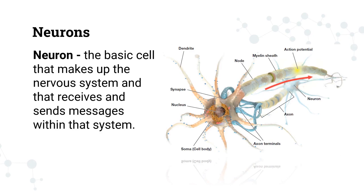If you command your arm to move, basically your neurons are communicating with each other. If you see something — like you're looking at your laptop right now — the information that enters through your eye will travel through the neurons so that it will make its way to the brain.